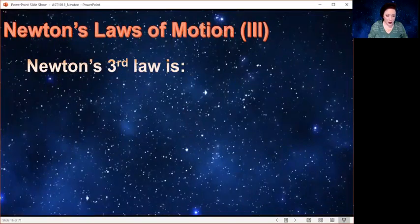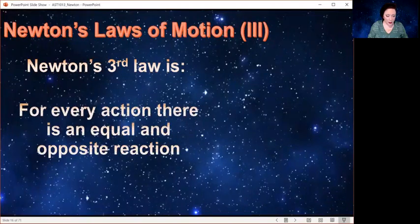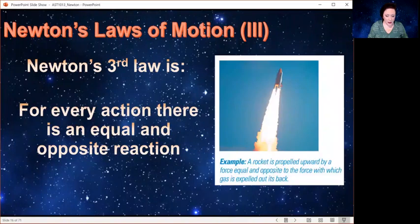Okay, let's move on to Newton's third law. Newton's third law basically says that for every action, there is an equal and opposite reaction. A good example of this is that a rocket is propelled upward by a force equal and opposite to the force with which gas is expelled out its back. So that rocket is moving because it is moving equal and opposite to the gas coming out of the jets.